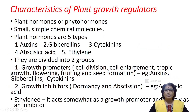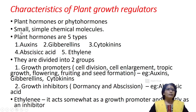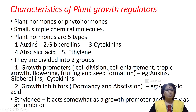The characteristics of plant growth regulators: these are commonly called plant hormones or phytohormones. Phyto means plants. These hormones are secreted inside the plant body in small quantities and are made up of simple chemical molecules. Even though produced in small quantities, they play an important role in plant growth and development. There are five types: auxins, gibberellins, cytokinins, abscisic acid and ethylene.